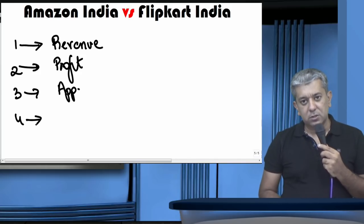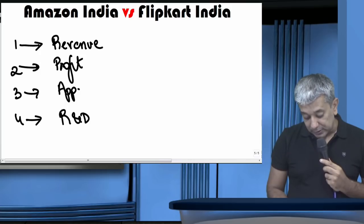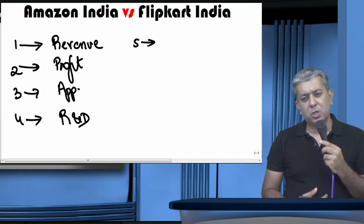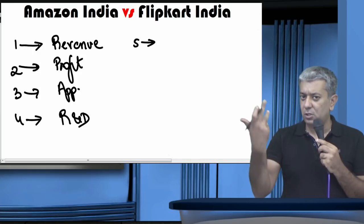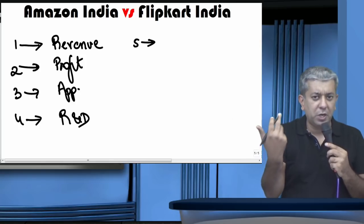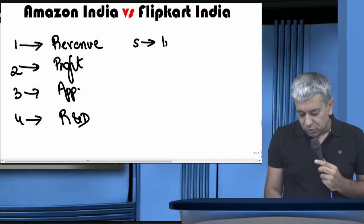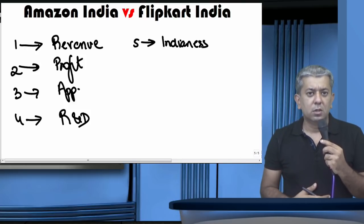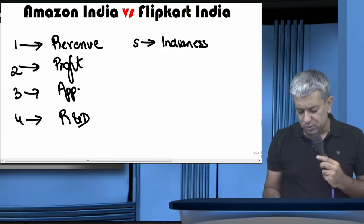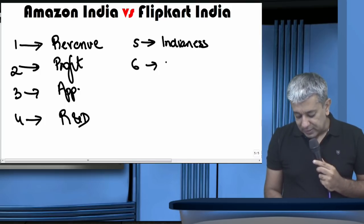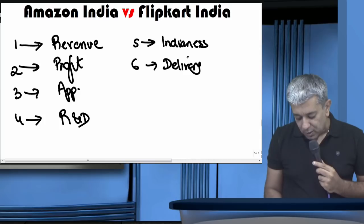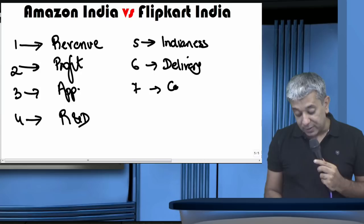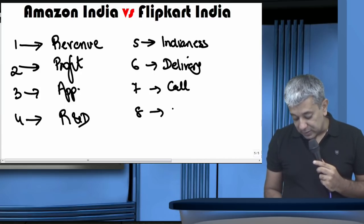Which company is doing more research and development — that could be a fourth criteria. Fifth: whose owners were Indians? I love Indian companies, so the 'indianness' of a company — rank it based on whether it was formed in India or not. Which company has faster delivery — rank based on that also. Whose call center is better — that's another criteria.